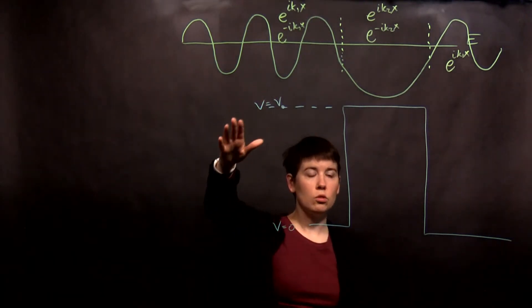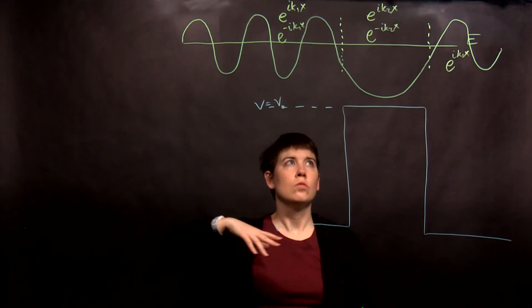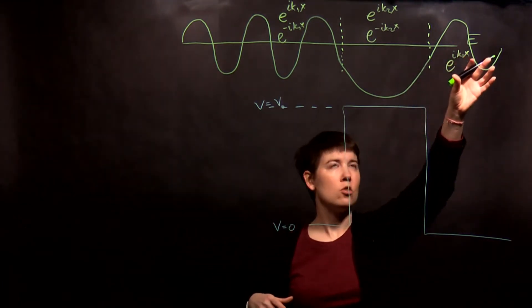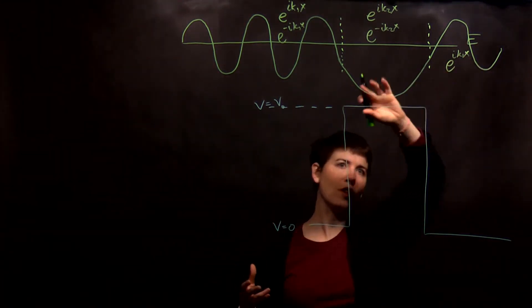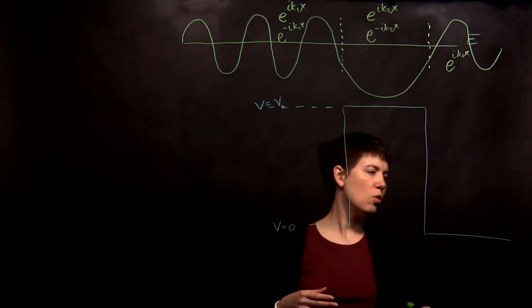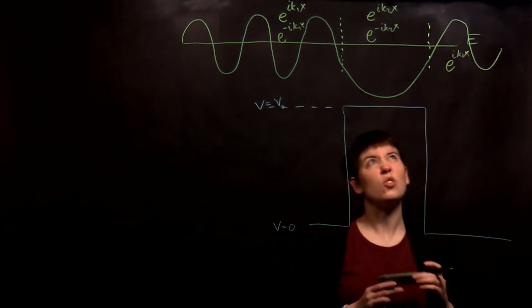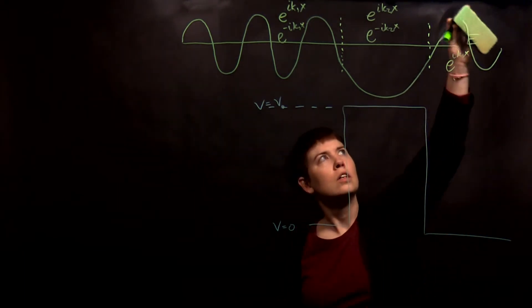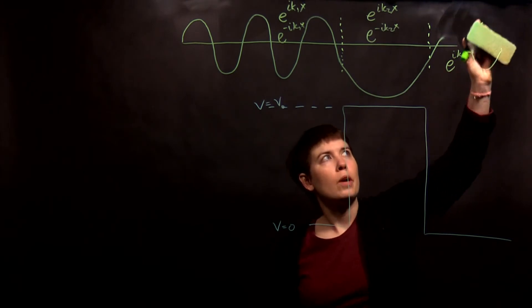So we can sketch what that's going to look like. And the magnitude here shouldn't be bigger, right? We shouldn't end up with more transmitted. So if I've drawn it about the same, that's not great. Let me go back and try to make this a little bit better.